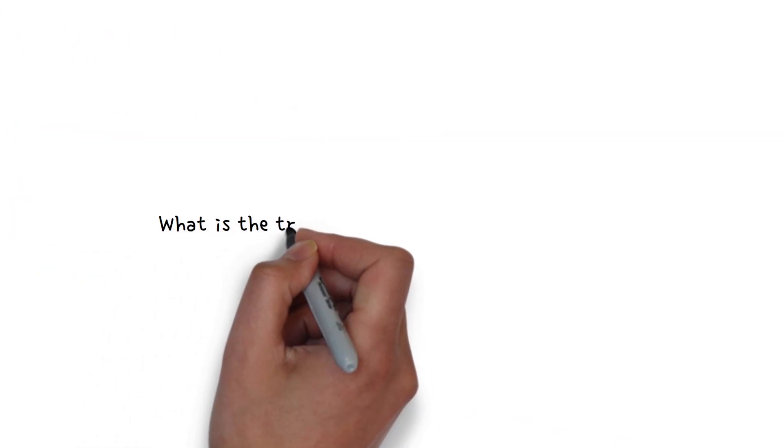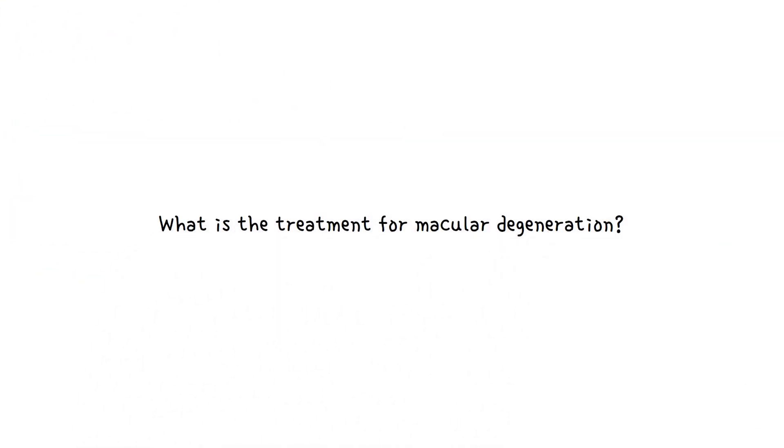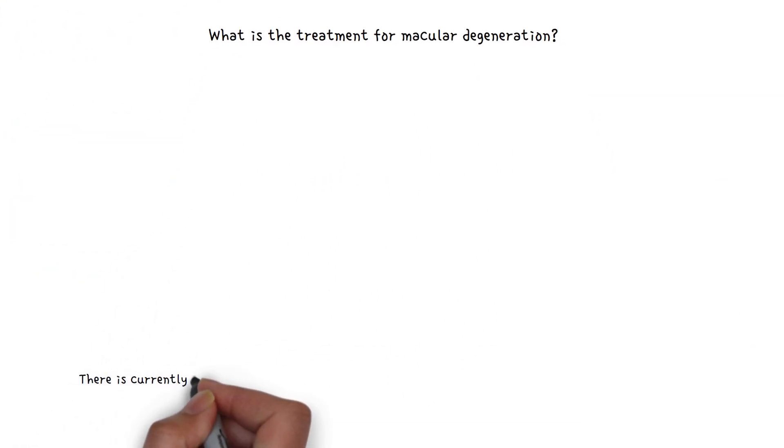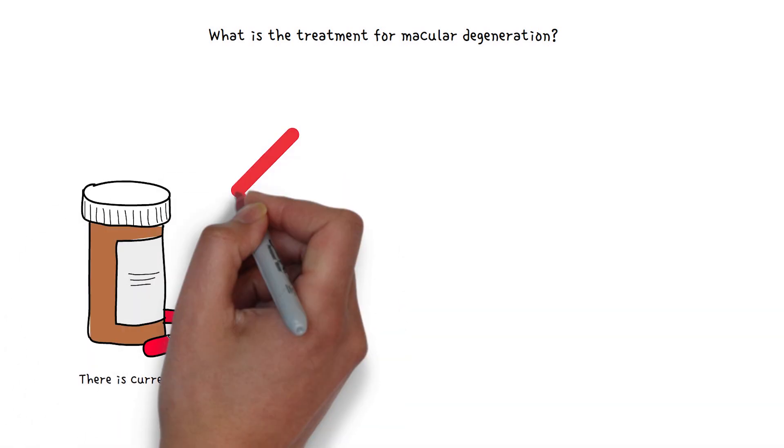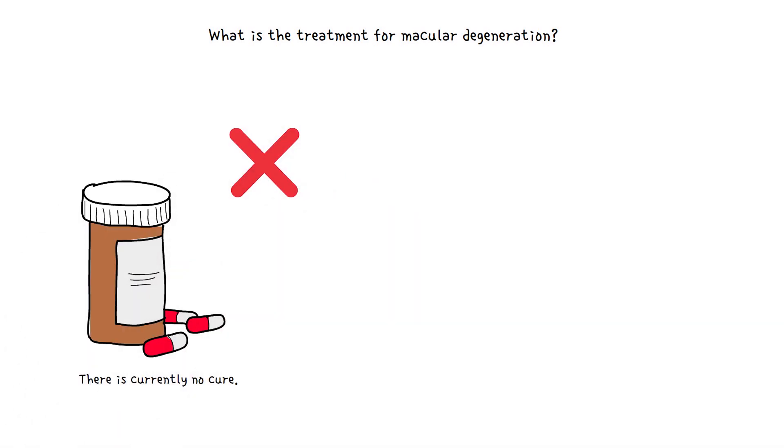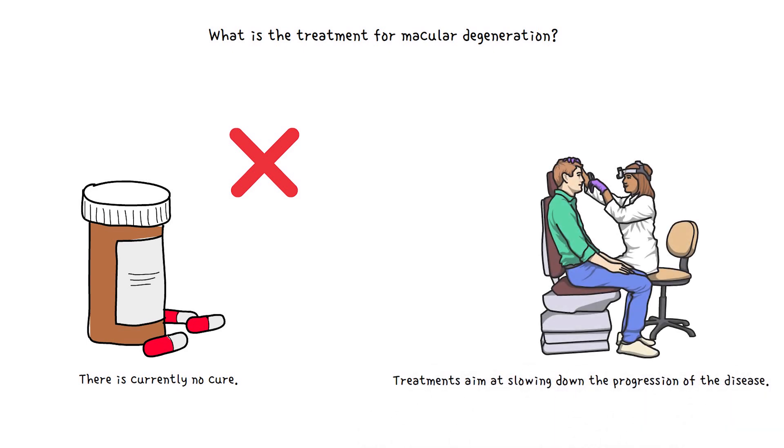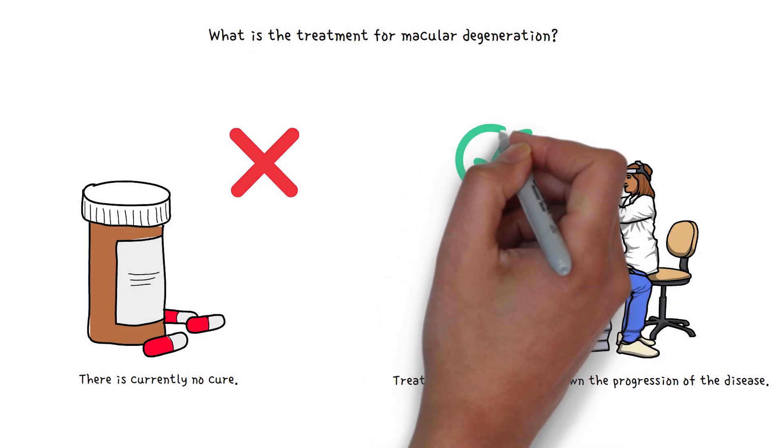What is the treatment for macular degeneration? There is currently no cure for macular degeneration. Treatments aim at slowing down the progression of disease and keeping you from losing too much of your vision.